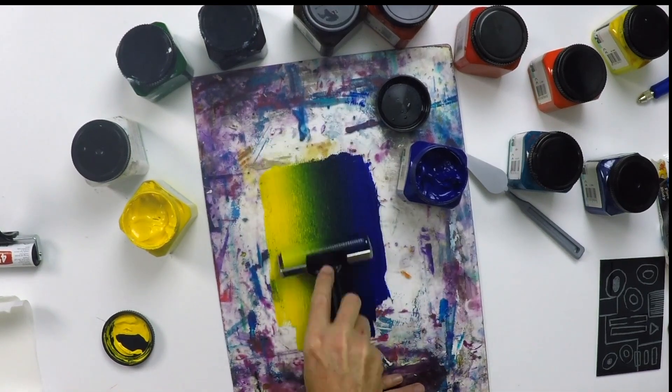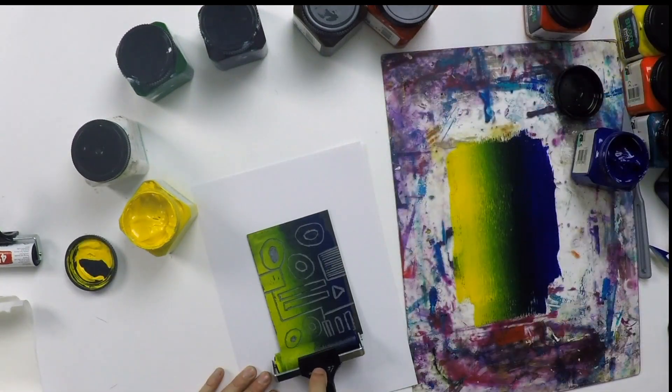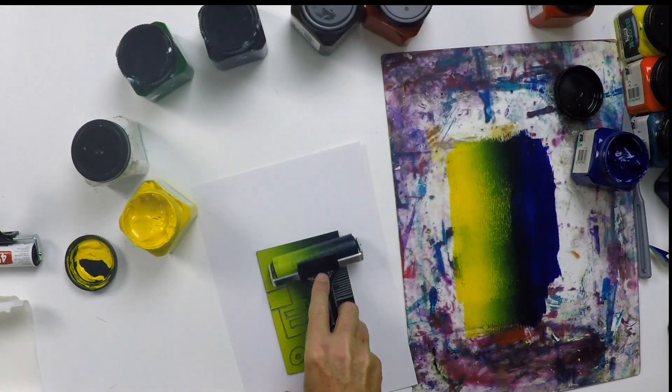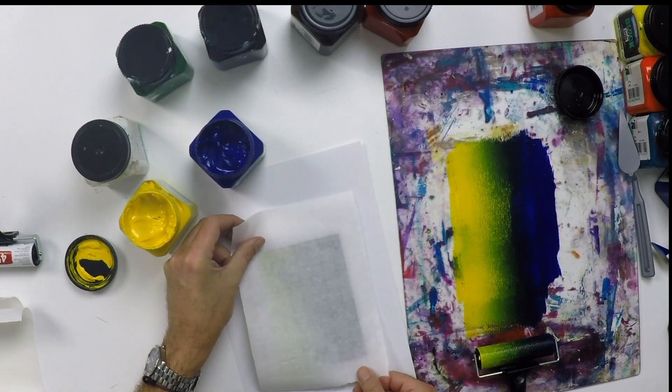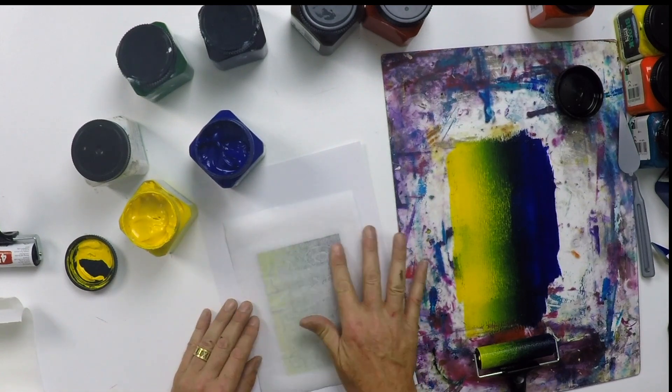Then we'll grab our lino and roll it up. Place our paper on there, put a bit of a rub using a spoon or your hand, and we'll peel that off.